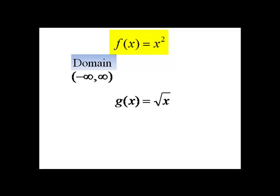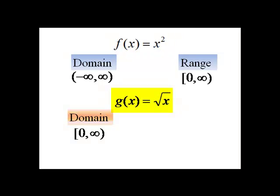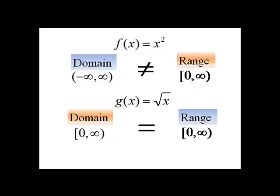Now the domain of f is negative infinity to infinity and the range is zero to infinity including zero. For g, the domain is zero to infinity including zero and the range is also zero to infinity including zero. What we should notice right away is that the domain of f does not equal the range of g. That is a requirement for two functions to be inverses of each other. The domain of g does equal the range of f.